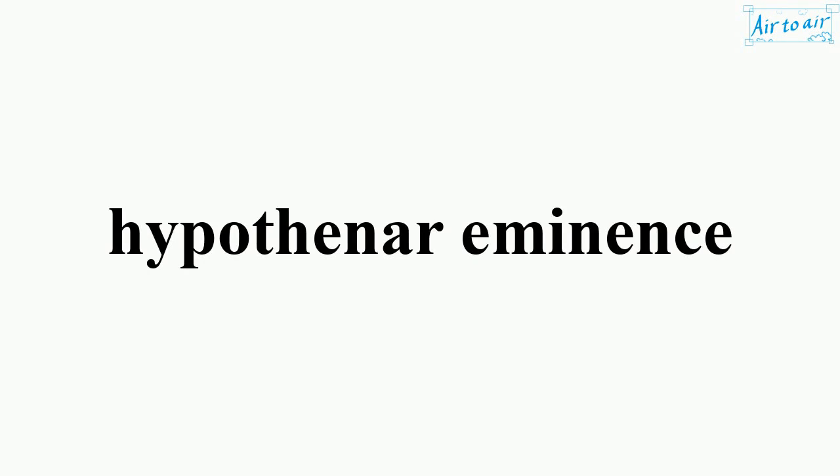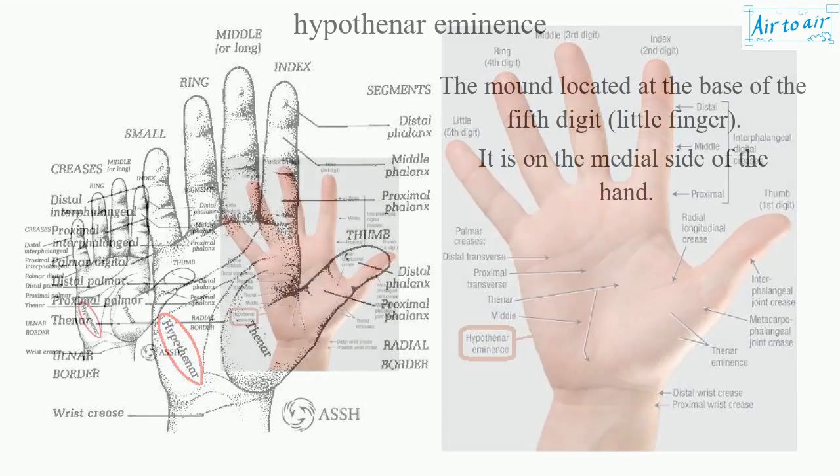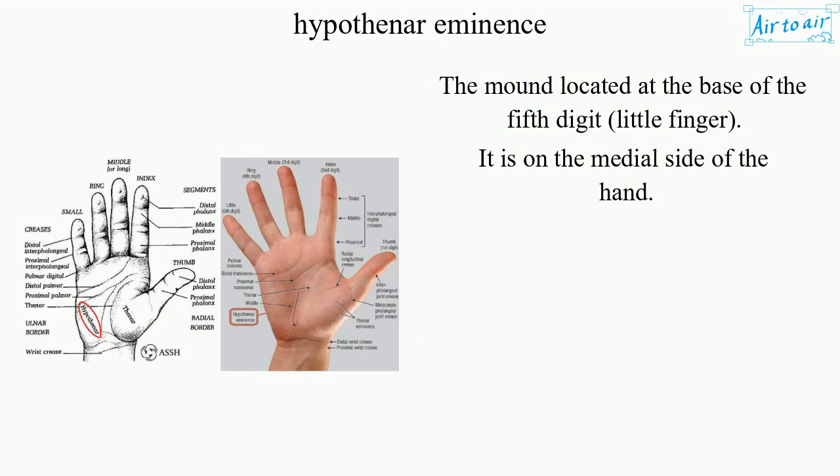Hypothenar Eminence. The mound located at the base of the fifth digit, the little finger. It is on the medial side of the hand.